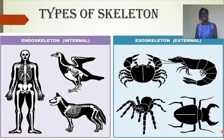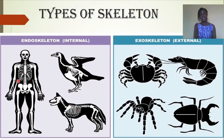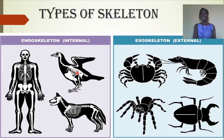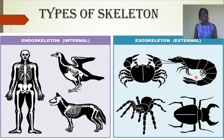These are examples of organisms with an endoskeleton. To my left we have the human, the bird, and the dog — mammals as well as birds have an endoskeleton, meaning the skeletal system is internal. Examples of organisms with an exoskeleton include crabs, lobsters, spiders, scorpions, and others — they all have an exoskeleton because it is external to the soft tissues of the body.